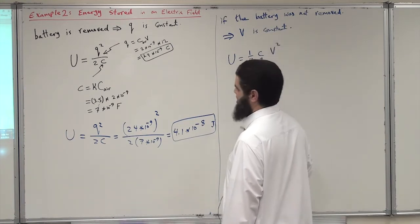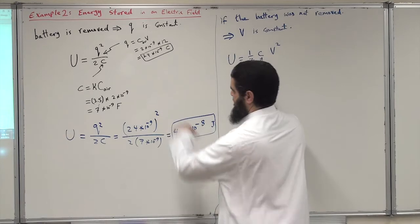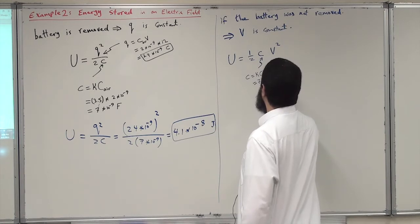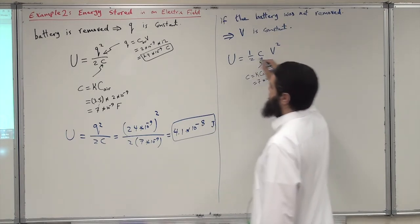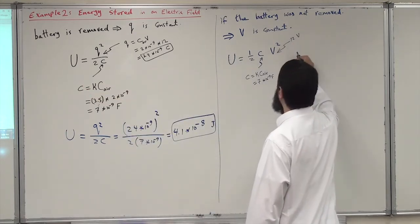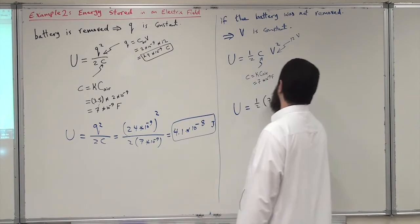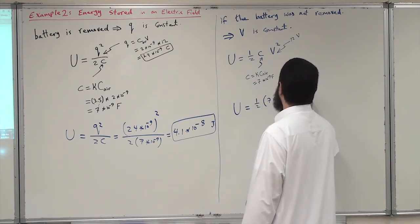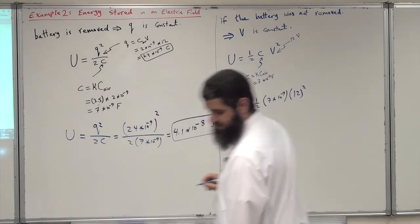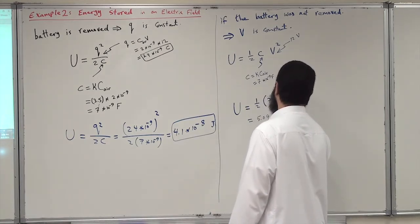C is the new capacitance, which equals κ times C-air. We have found that this equals 7 × 10⁻⁹ farad. And V is fixed at 12 volts. So U equals one half multiplied by 7 × 10⁻⁹ multiplied by 12 squared, giving a potential energy of 5.04 × 10⁻⁷ joules.